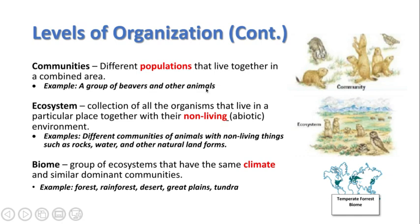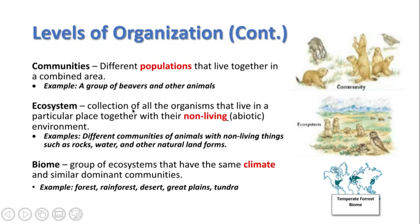Communities are different populations that live together in a combined area. You can think of a group of beavers and other animals living in an area, or think more locally — Aurora, Oswego, Montgomery are different populations from different towns but together they form a larger community. Next up is the ecosystem, which is a collection of all the organisms that live in a particular place, including both the non-living and living parts of an environment.